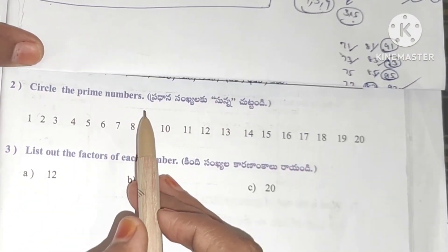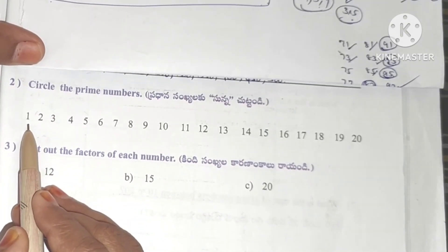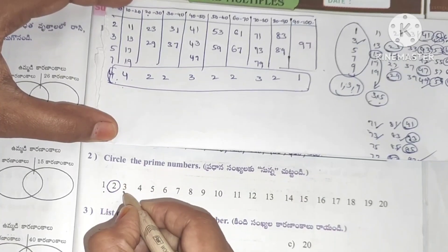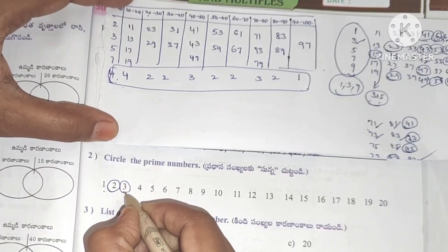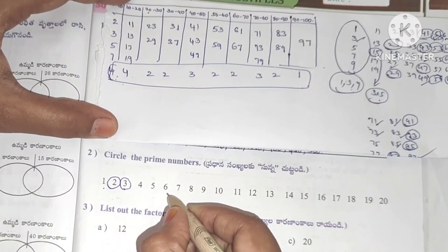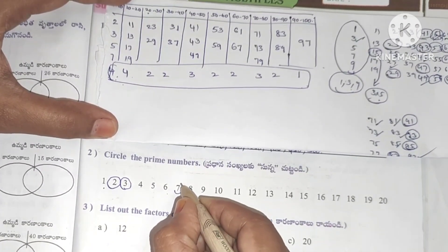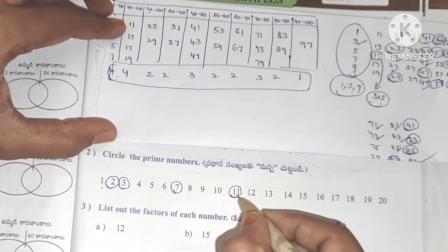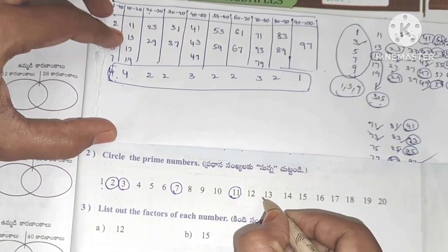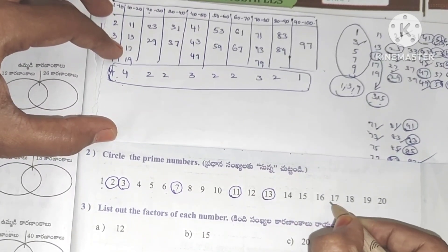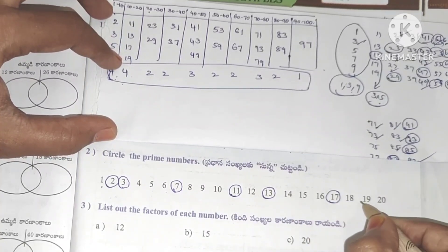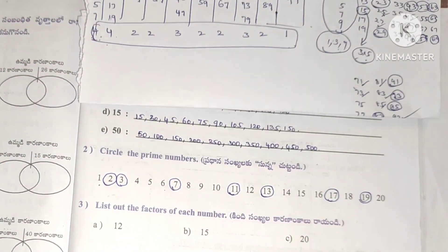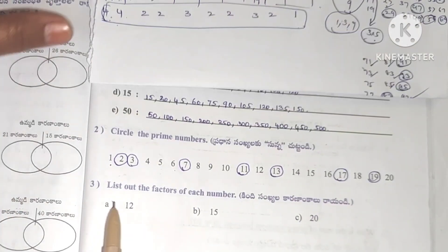Circle the prime numbers: 1 is not prime. 2 is prime — circle it. 3 is also a prime number. 4 is not. 5 is prime. 6 is not. 7 is also a prime number. In this list we also have 11, 13, 17, and 19 — circle the prime numbers.